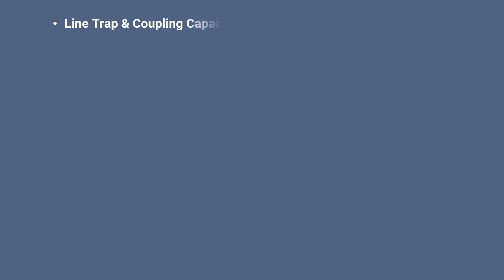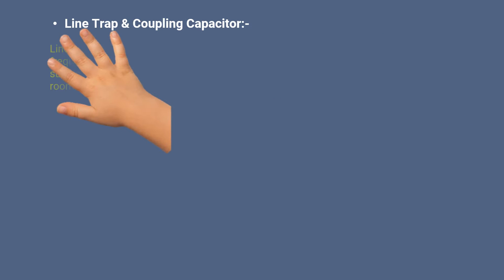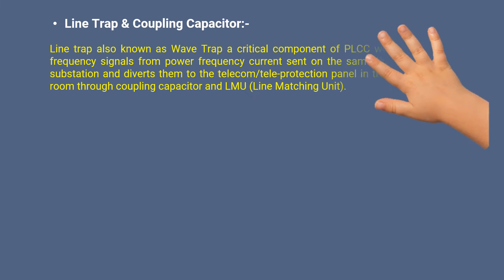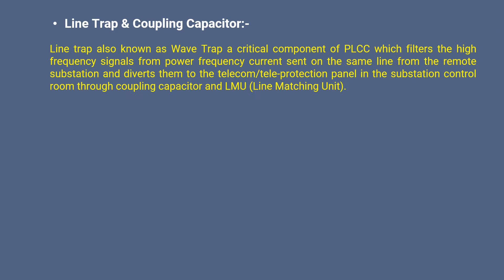Line trap, also known as wave trap, is a critical component of PLCC which filters the high frequency signals from power frequency current sent on the same line from the remote substation, and diverts them to the telecom and teleprotection panel in the substation control room through coupling capacitor and LMU (Line Matching Unit).